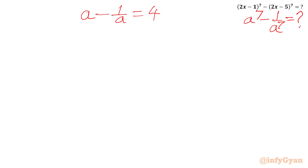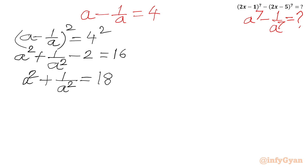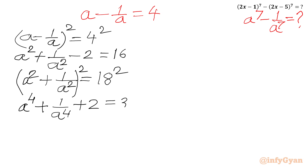Squaring both sides of a − 1/a = 4: (a − 1/a)² = 16. Applying the (a − b)² formula on the left gives a² + 1/a² − 2 = 16, so a² + 1/a² = 18. Squaring again: a⁴ + 1/a⁴ + 2 = 324, so a⁴ + 1/a⁴ = 322. This is equation 1.